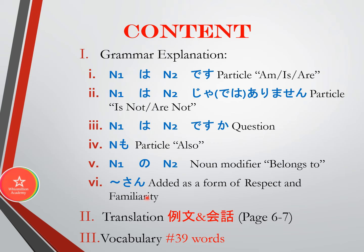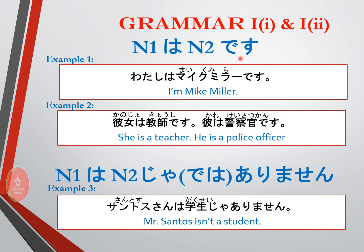The last grammar introduces the word san. San normally appears at the end of a person's name to indicate respect, like Mr. and Miss in English. We don't use san when referring to our own family members — it's more natural to say 'this is my father' rather than 'Mr. something.' We'll also do English translations for the Reibun (examples) and Kaiwa (conversations) on pages six and seven, followed by 39 new vocabulary words and the two bonus clips.